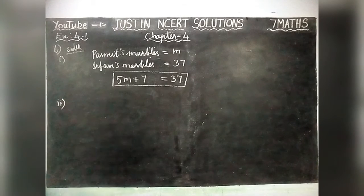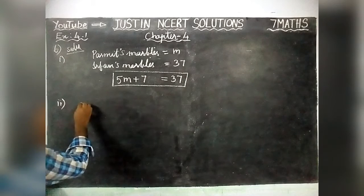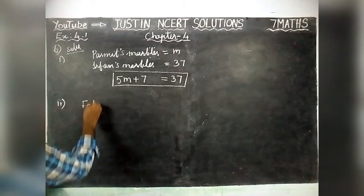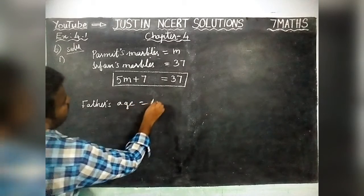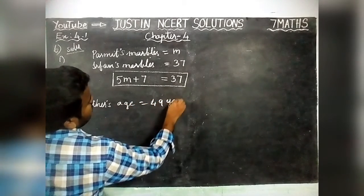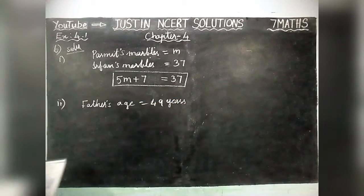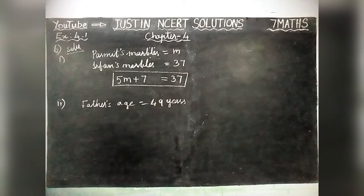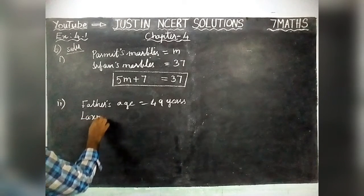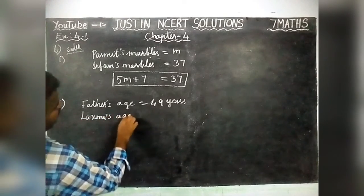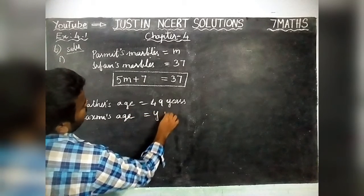2nd question: Laxmi's father is 49 years old. Father's age equal to 49 years. He is 4 years older than 3 times Lakshmi's age. We have taken Lakshmi's age equal to Y years.